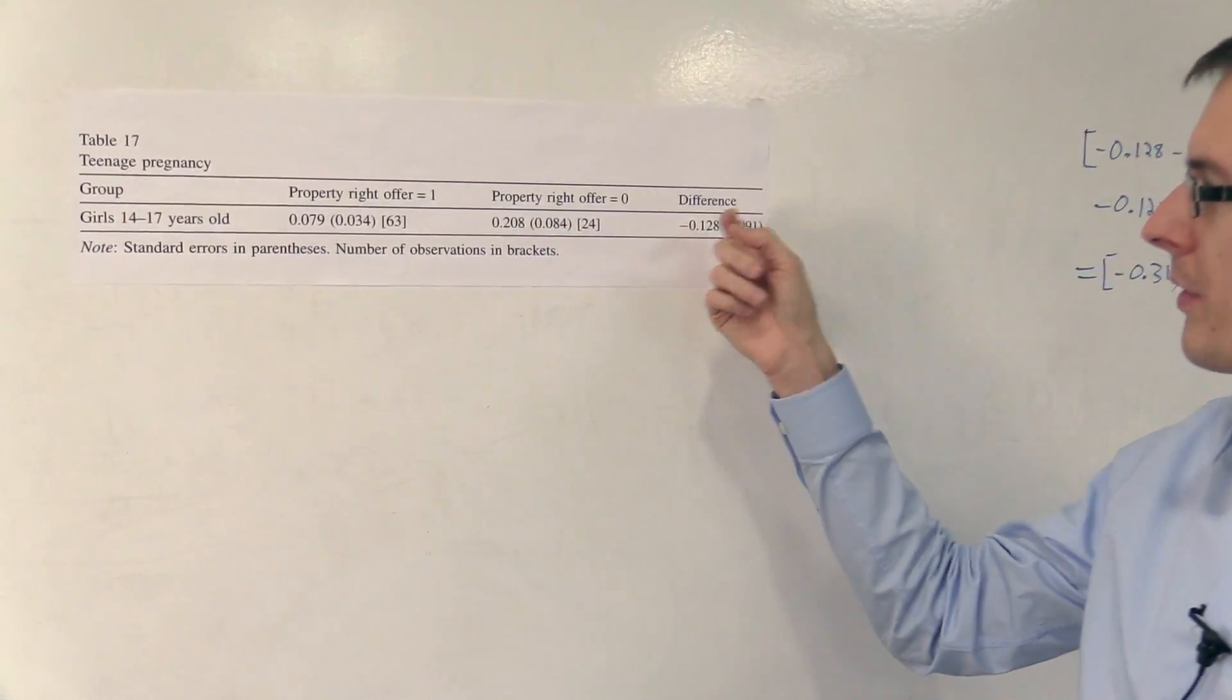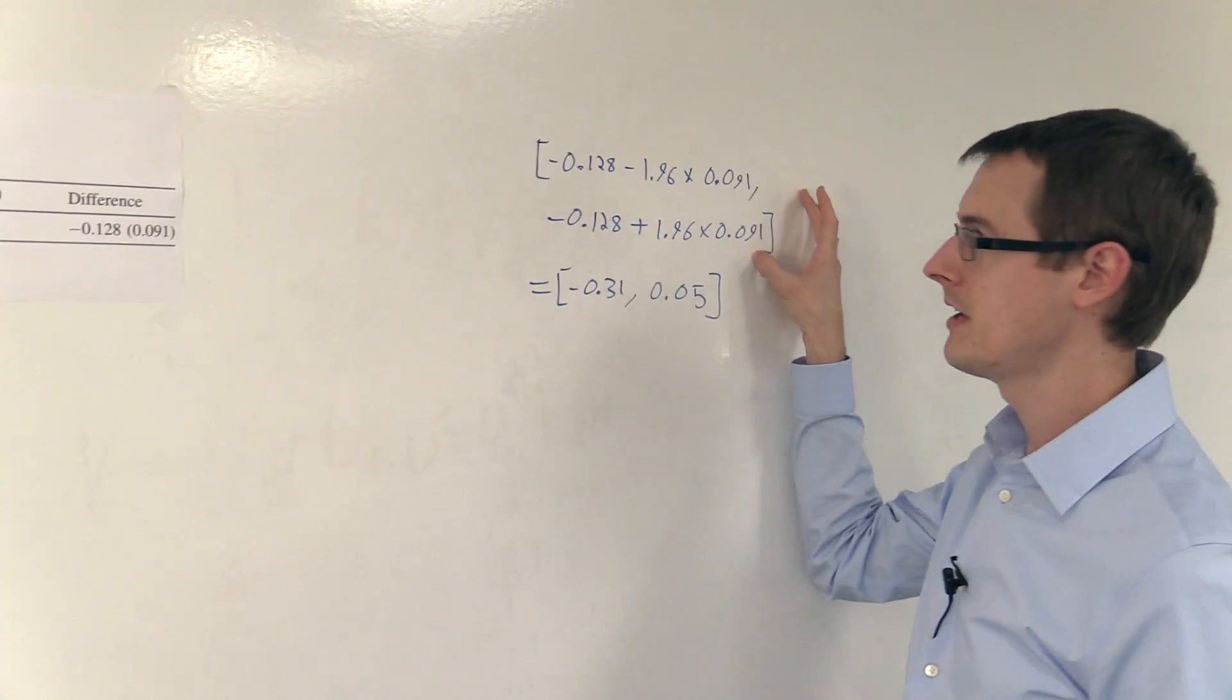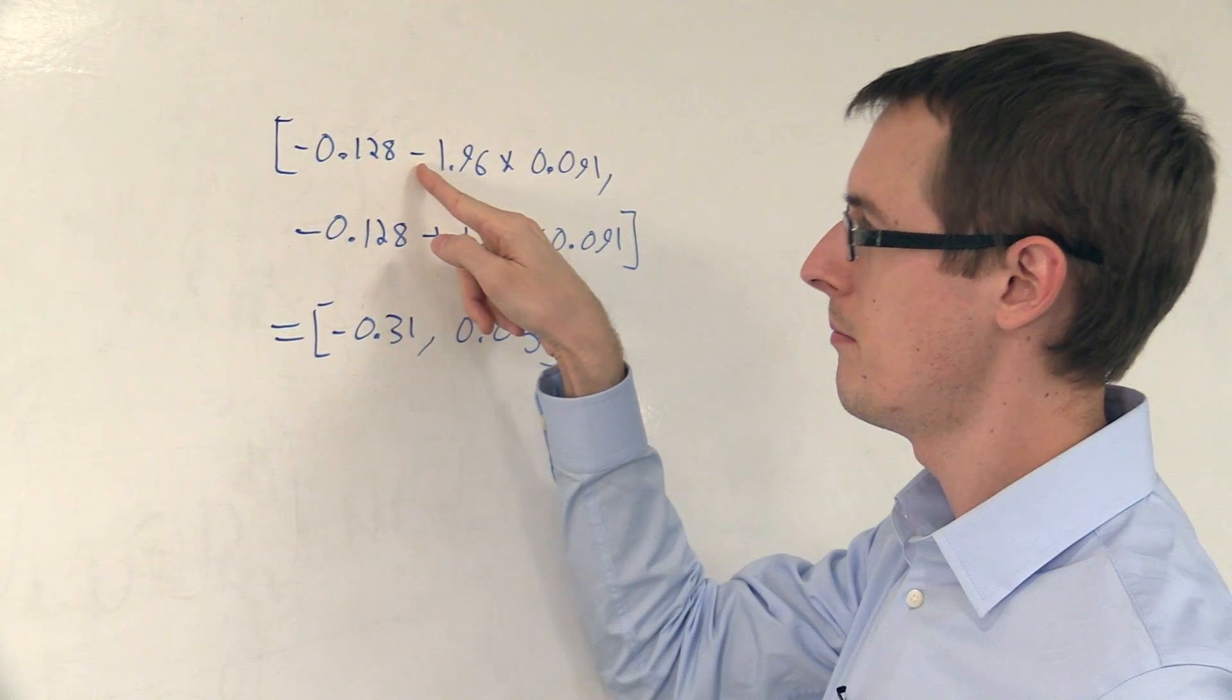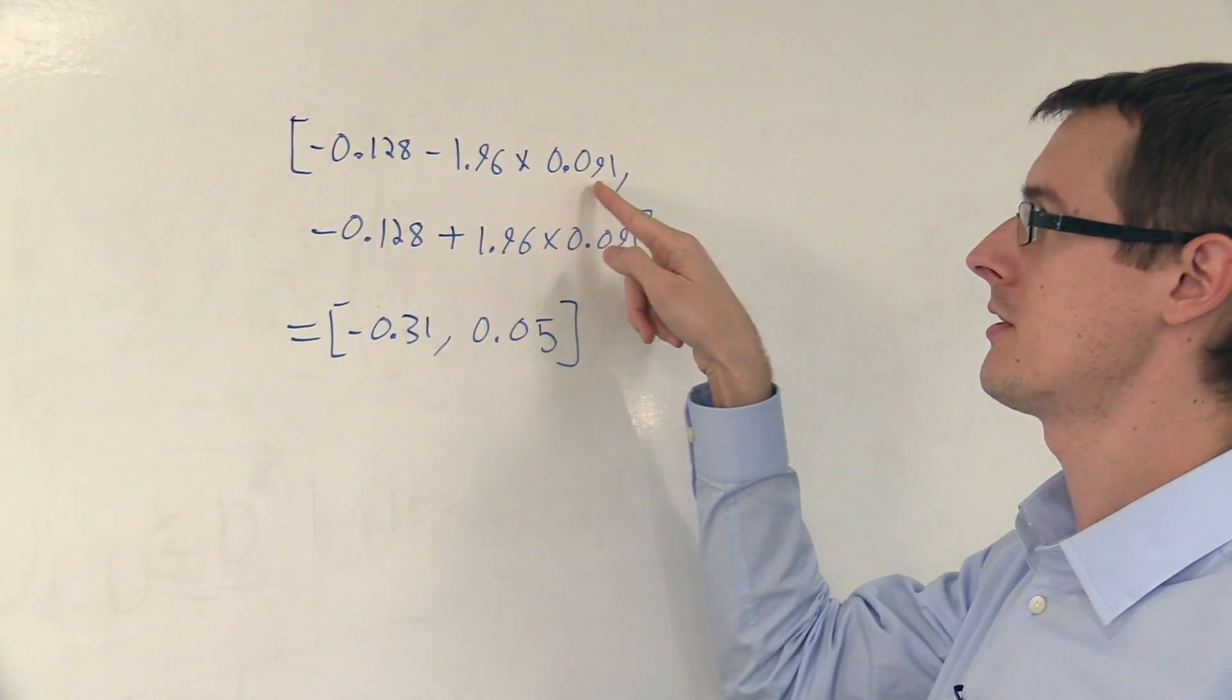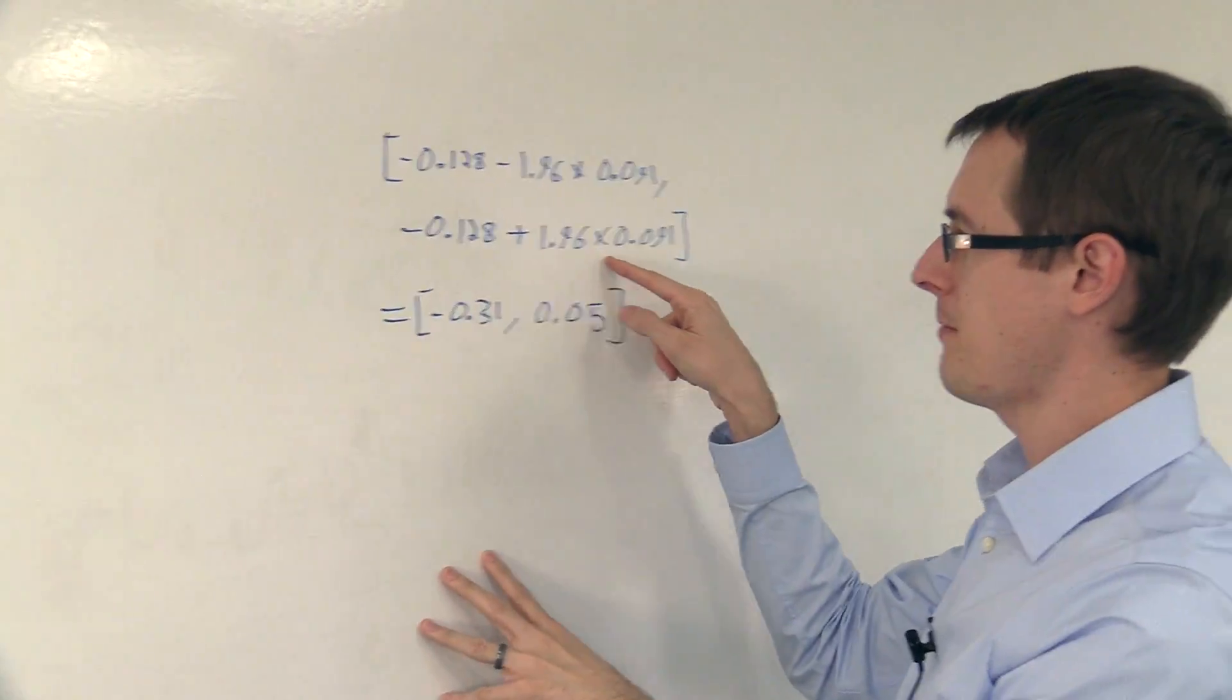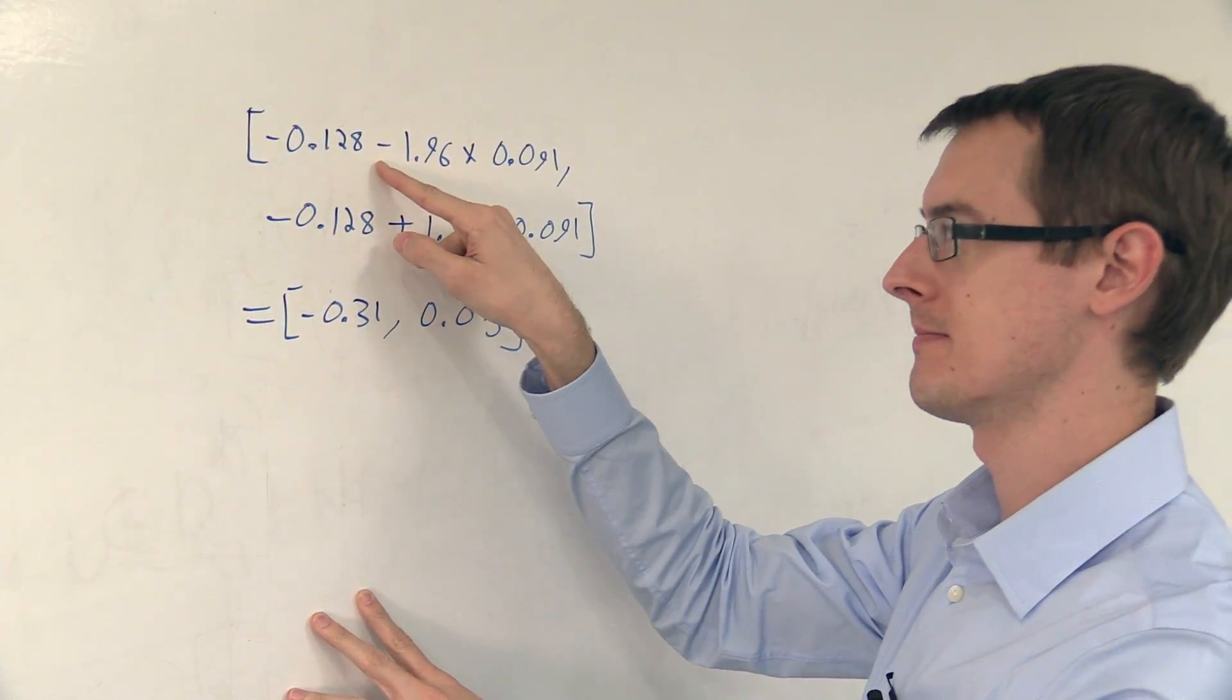So we're going to have to do the confidence interval for that. And that I've drawn right here. I've got our effect, our average treatment effect estimate of minus 0.128 minus 1.96 times the standard error, 0.091. And that's this number here from the table. That's our lower bound. Our upper bound is the same thing except we add this second piece instead of subtract it.